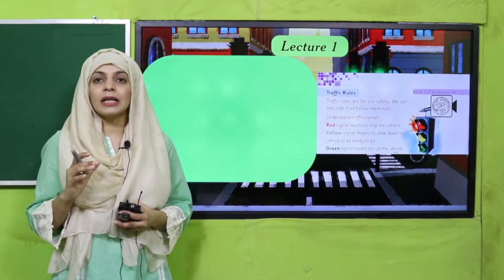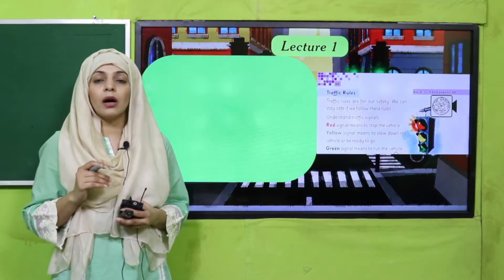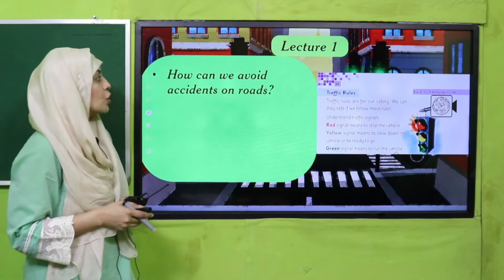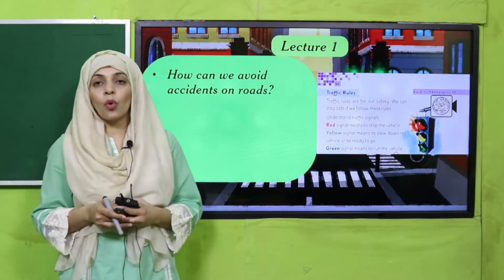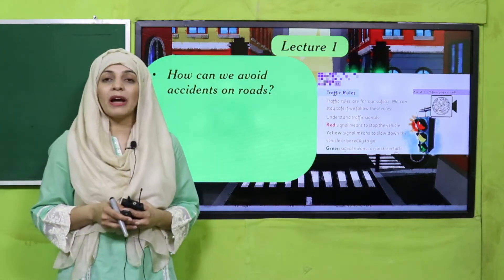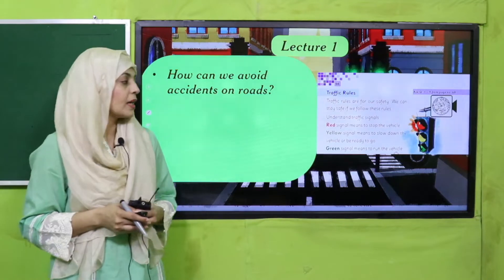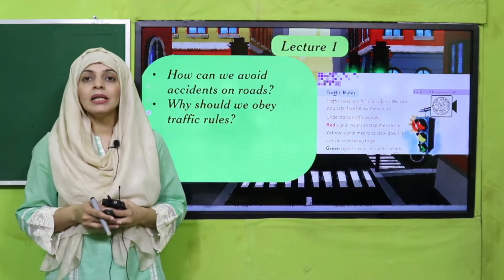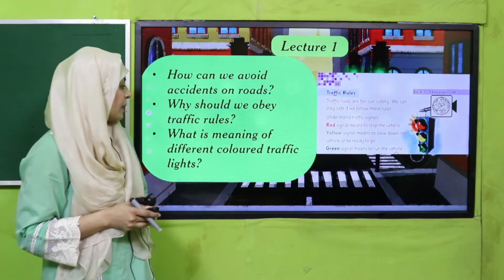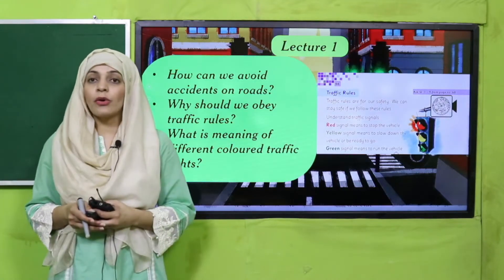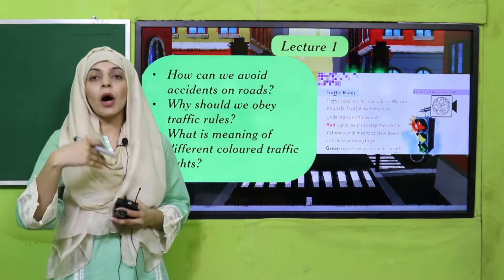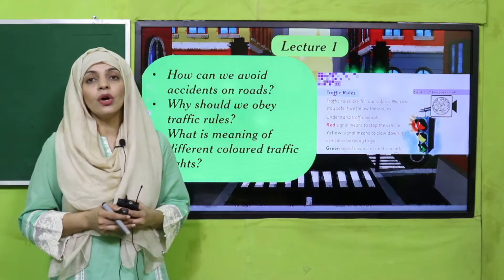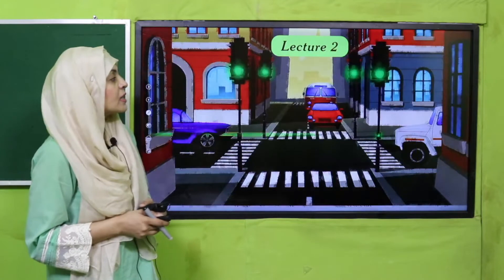We discussed the different traffic light colors — green, yellow, and red — and what their meanings are. We discussed how we can avoid accidents on roads by following traffic rules, and why we should obey traffic rules to keep everyone safe. Red means to stop, yellow means to get ready or slow down, and green means to go.